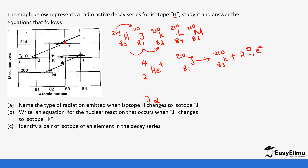To identify a pair of isotopes, we need nuclides with the same atomic number but different mass numbers. Looking at the series, H (214, 83) and K (210, 83) both have atomic number 83, so H and K are a pair of isotopes. That brings us to the end — see you in the next lesson as we look at half-life.